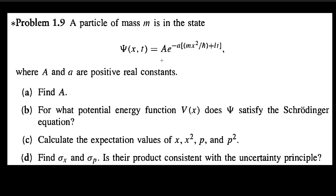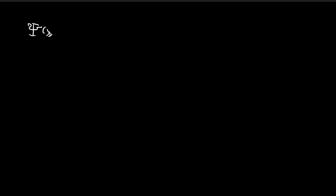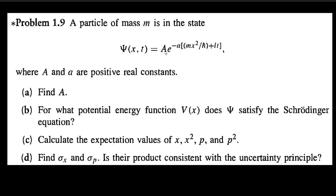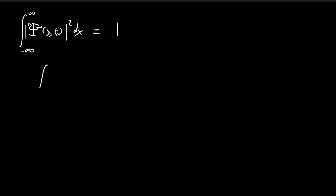We're going to start off by finding A, and the way we do that is by normalizing this wave function. That means if we take the absolute value squared of the wave function and integrate throughout all possible space — from negative infinity to positive infinity — this should be equal to 1. Let's calculate this expression, which will allow us to deduce what the constant A should be.